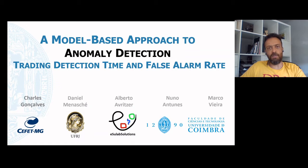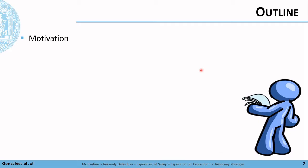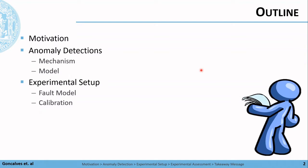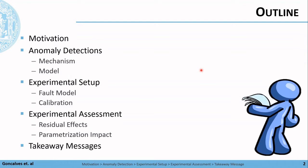In the next minutes, I will briefly explain the key points of the work and hope that you find it useful. This talk is divided into five parts: the motivation, the introduction of our anomaly detection mechanism and model, followed by the explanation about our experimental setup, experimental campaign and assessment, and the takeaway messages where we conclude this presentation.